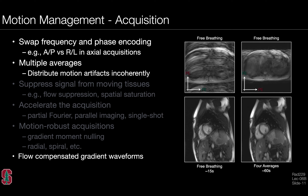When it comes to motion management, there are many different approaches to consider. At the acquisition end of the spectrum, we've talked about swapping the phase and frequency encoding directions to limit motion artifacts. We could also use multiple averages. The one I want to describe mostly today is so-called flow-compensated gradient waveforms — a very pulse-sequence-oriented approach to limiting motion artifacts.